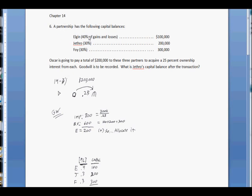A partnership has the following capital balances. We got Algin here, and he shares profits and losses with the rest of the partners. He gets 40% of the profits when they come in, and he's got a capital balance of $100,000. Jethro, another partner of the partnership, he's got $200,000 worth of capital. Foya is another partner and they've got $300,000 in their capital balance. And here's the event. I call events ZOW now. The event in this problem is Oscar is going to pay a total of $200,000.